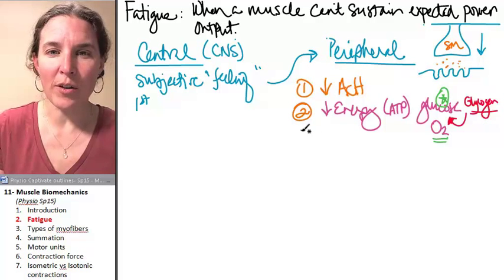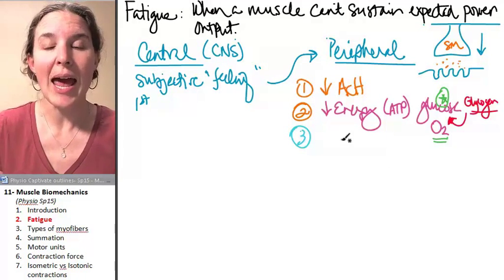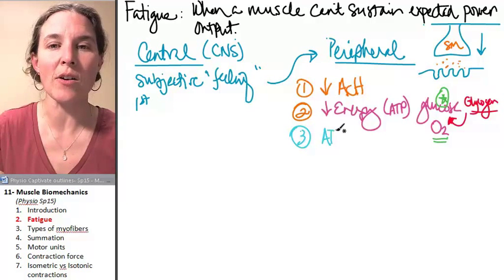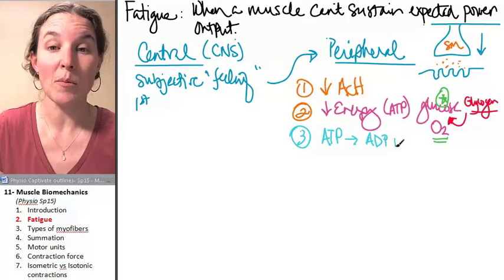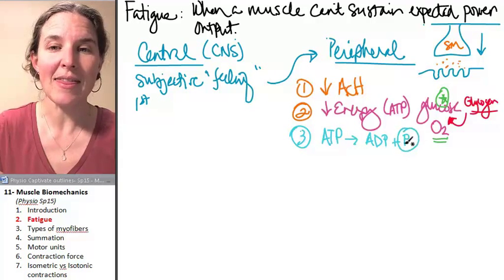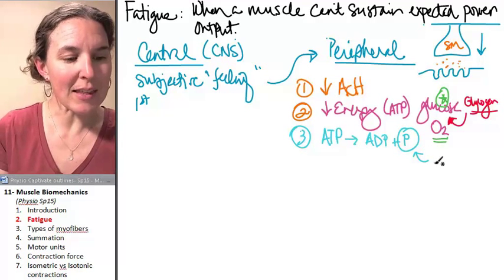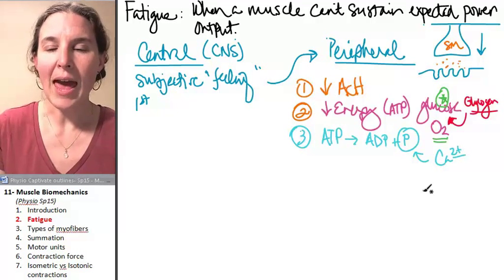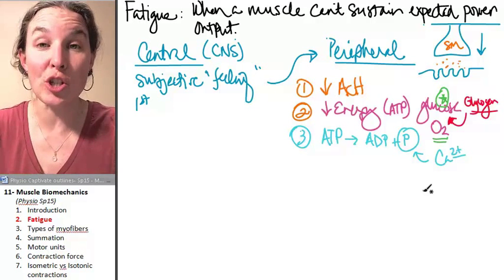Sometimes you end up with garbage as a byproduct. And one of the things that they think might be a player is when we break down our ATP into ADP plus P, they think the P actually binds with calcium and then makes the calcium unable to do its role in the muscle contraction itself.